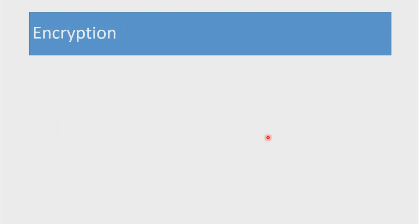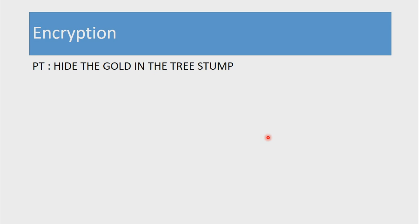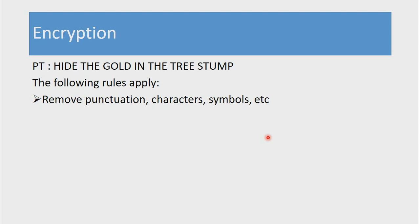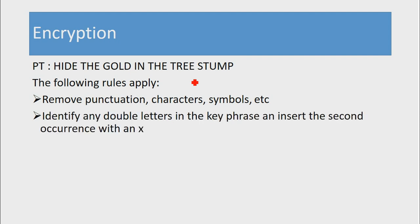Now that we've formed the 5x5 matrix, the next step is to manipulate the plain text. The following rules apply when dealing with plain text in the Playfair system. To encrypt a plain text such as 'hide the gold in the tree stamp', the first rule is to remove punctuation characters or symbols like question marks, commas, or full stops, since the 5x5 matrix does not contain such characters. The next step is to identify any double letters and insert an X at the second occurrence.